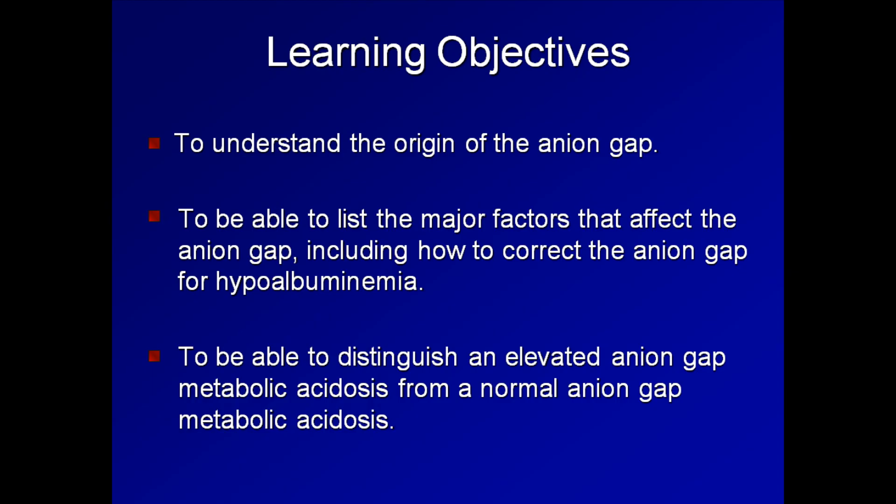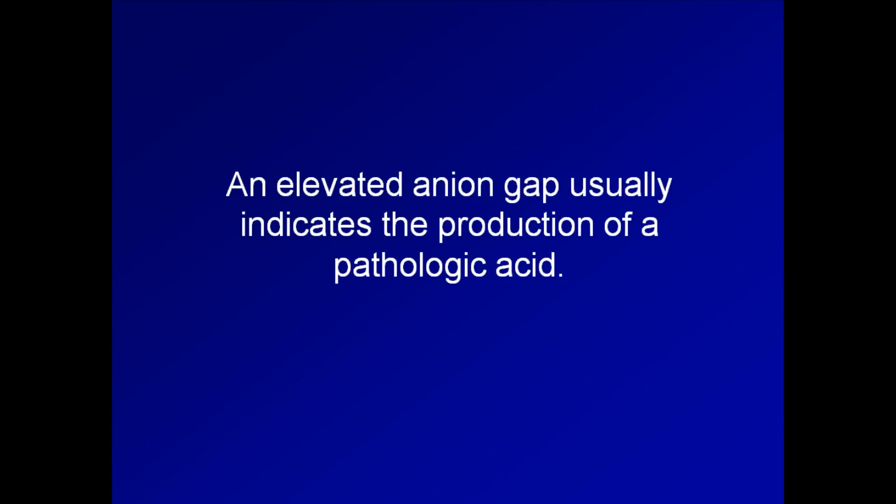Measurement of the anion gap is a critical step in approaching the differential diagnosis of a metabolic acidosis. An elevated anion gap indicates the presence of a non-routinely measured anion, which is usually caused by the production of a pathologic acid. Let's take a closer look at exactly what the anion gap is.